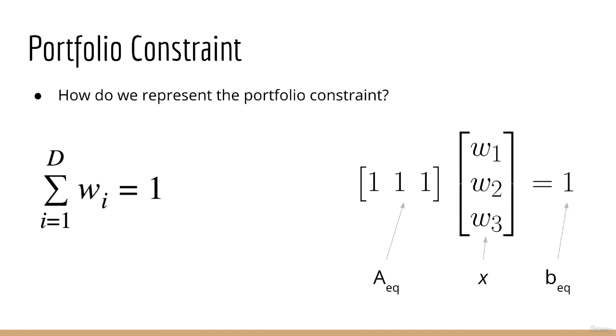Suppose that we have three x's, x1, x2, and x3. These all need to sum to 1. Let's say we have a matrix A_eq equal to a 1 by 3 matrix of 1's. Finally, let's suppose that we have b_eq, a 1 by 1 matrix containing just a single 1. We can see that, by using the constraint A_eq times x equals b_eq, we get exactly that the sum of the x's must equal to 1.